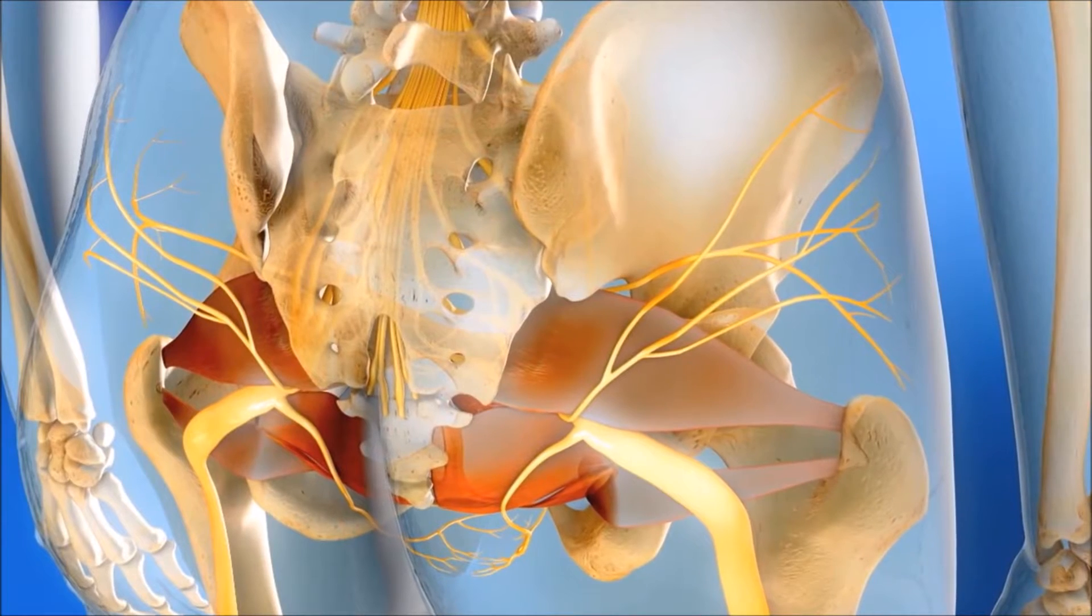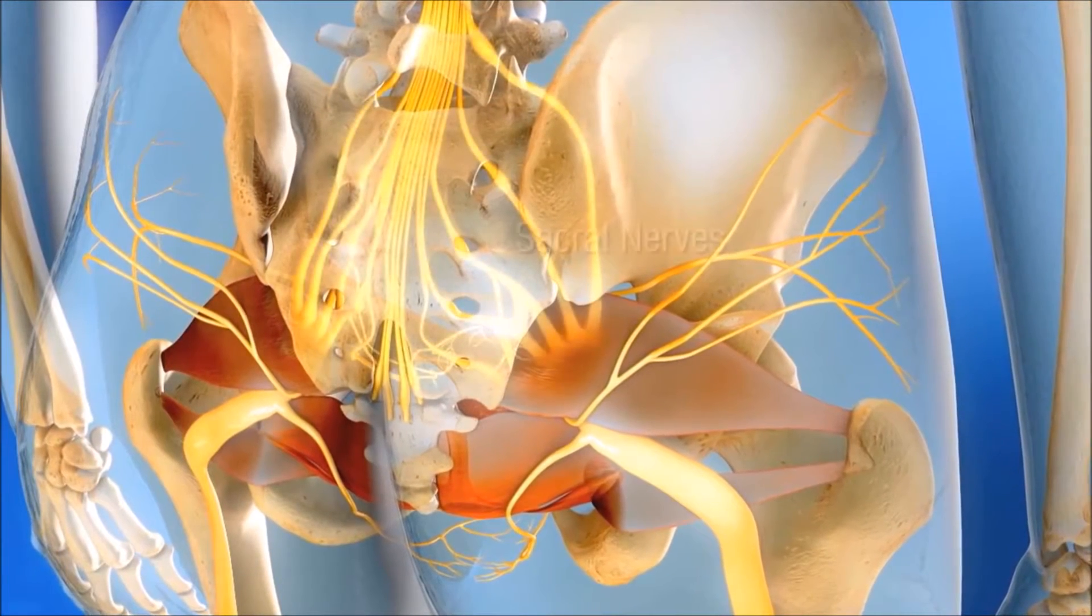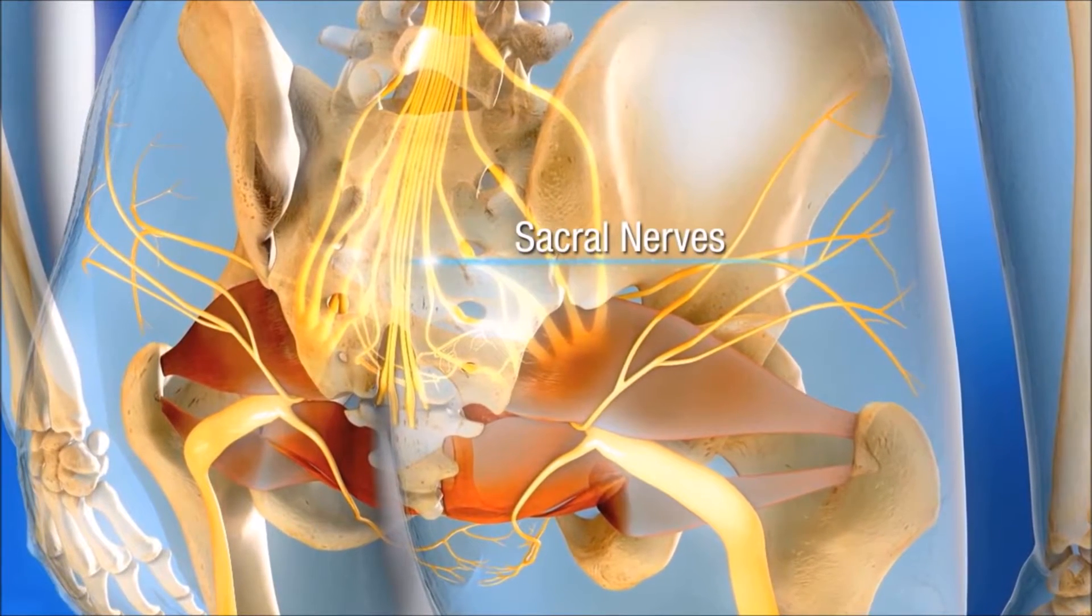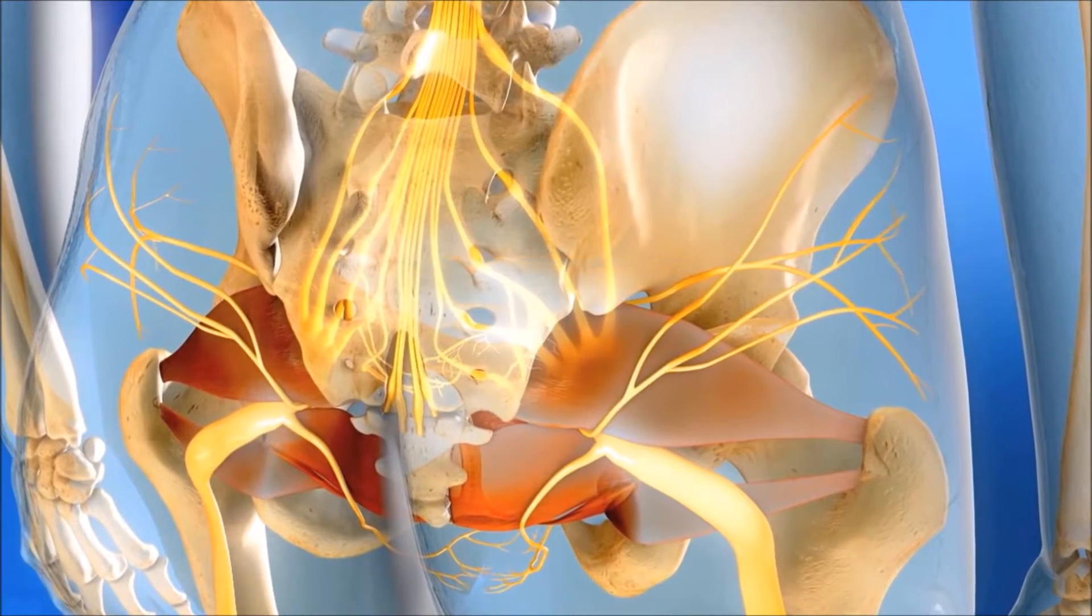Normal bladder functioning can be restored by influencing the sacral nerves, which convey a portion of the signals between the bladder, pelvic floor, and the brain.